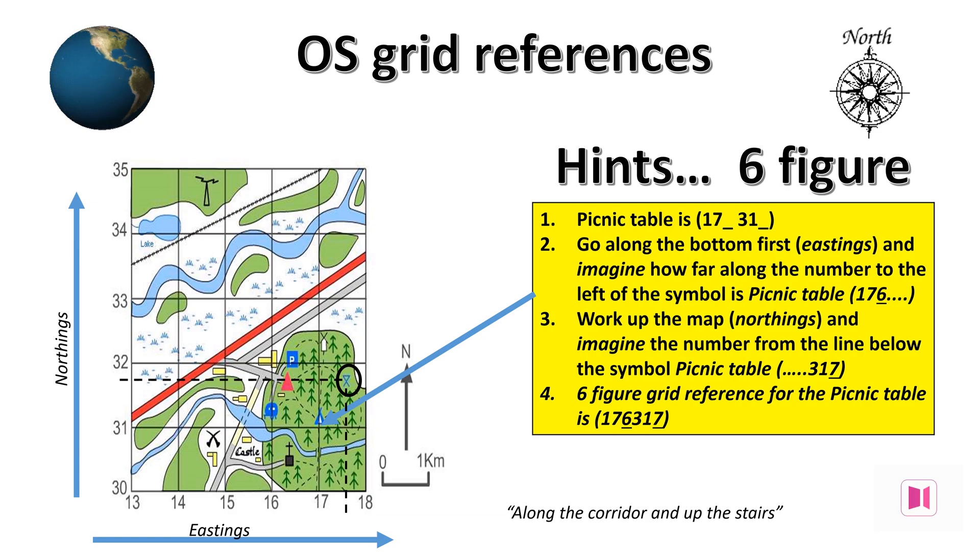The first three numbers are 17 and 6 tenths along, as shown by the black dashed line, whereas the three numbers upwards are 31 and 7 tenths up, giving 317. The picnic table is therefore 176317.